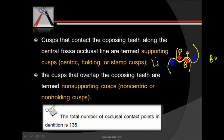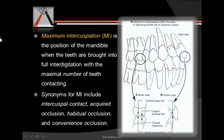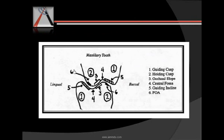Cusps that overlap the opposite arch are called non-supporting cusps, non-centric cusps, or non-holding cusps. Maximum intercuspation is the position of the mandible when most of the teeth come in contact with each other. In this position, most supporting cusps fit well into the central fossa, while the lower incisors touch the lingual inclines of the upper incisors. In the maxillary teeth, the palatal cusp forms the supporting cusp; in the mandibular teeth, it is the buccal cusp.